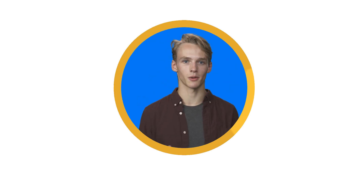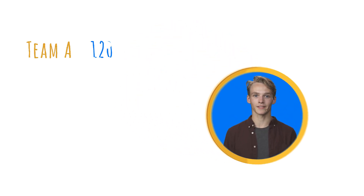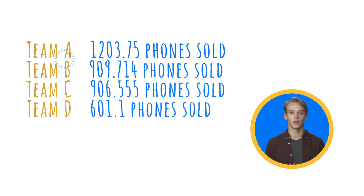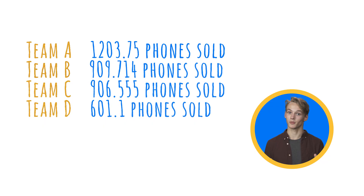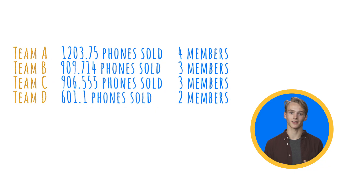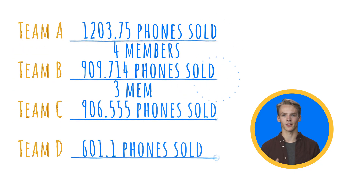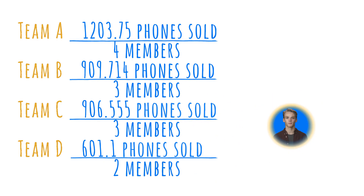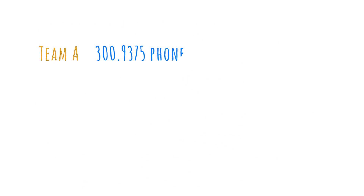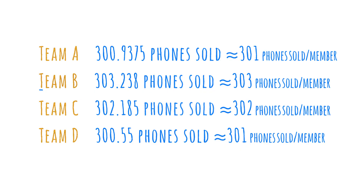If we calculate the phones sold in April for each sales team member and then sum up each team's total sales, it looks like team A is the winner. But we need to consider all the information in the sales report — each sales team also has a different number of sales team members. To be fair, we need to take this into account. We could divide each team's total sales by the number of sales team members. According to this approach, team B should get the bonus because they sold the most phones per sales team member.